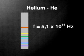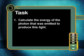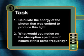Isn't it nice to know that the things you learn have practical applications? Here's your task for today. When a helium emission spectrum is produced, one of the lines is yellow. The frequency of this yellow light is 5.1 × 10¹⁴ Hz. Calculate the energy of the photon that was emitted to produce this light. What would you notice on the absorption spectrum of helium at this same frequency? That's all for this lesson — I'll see you next time. Goodbye.